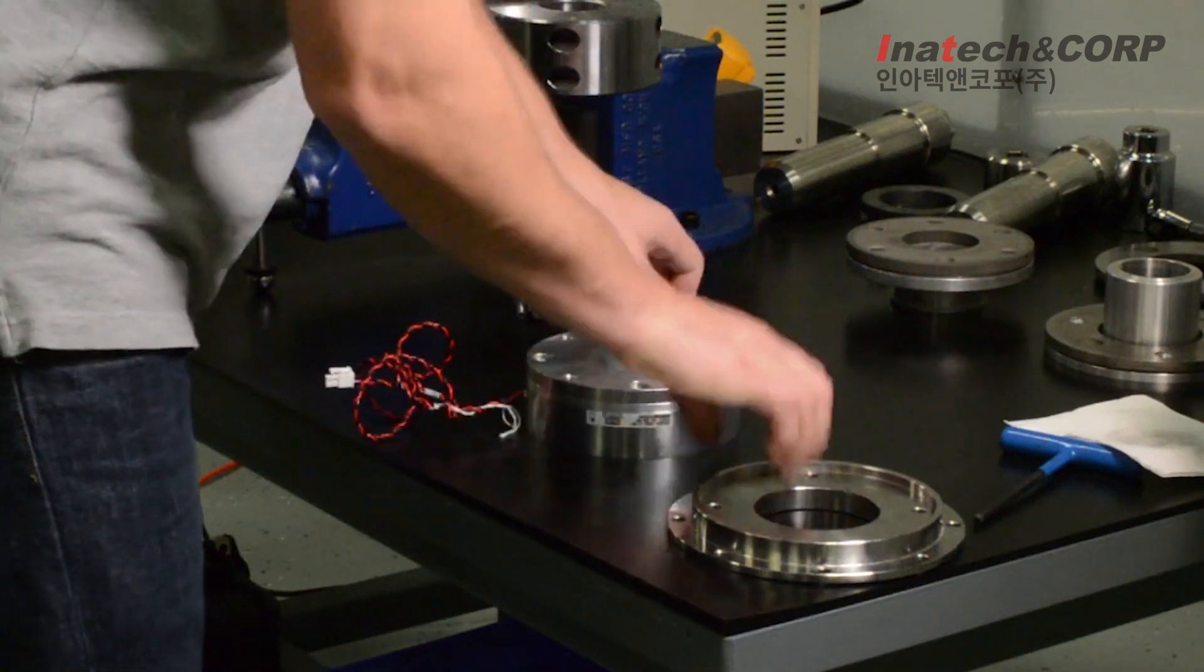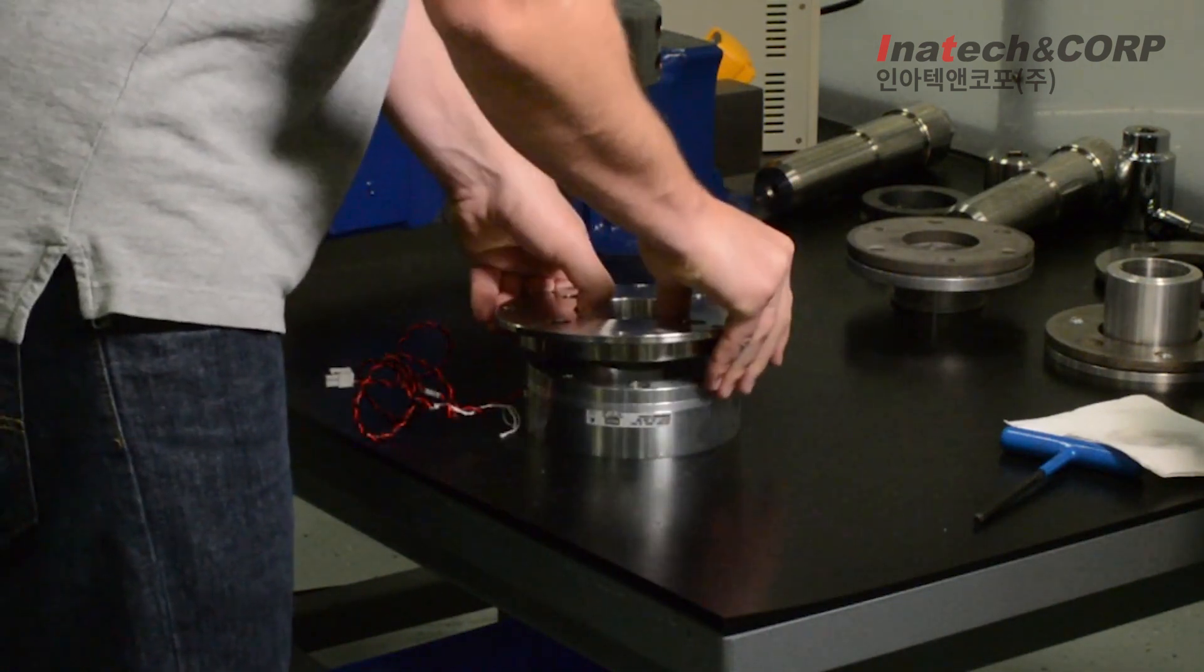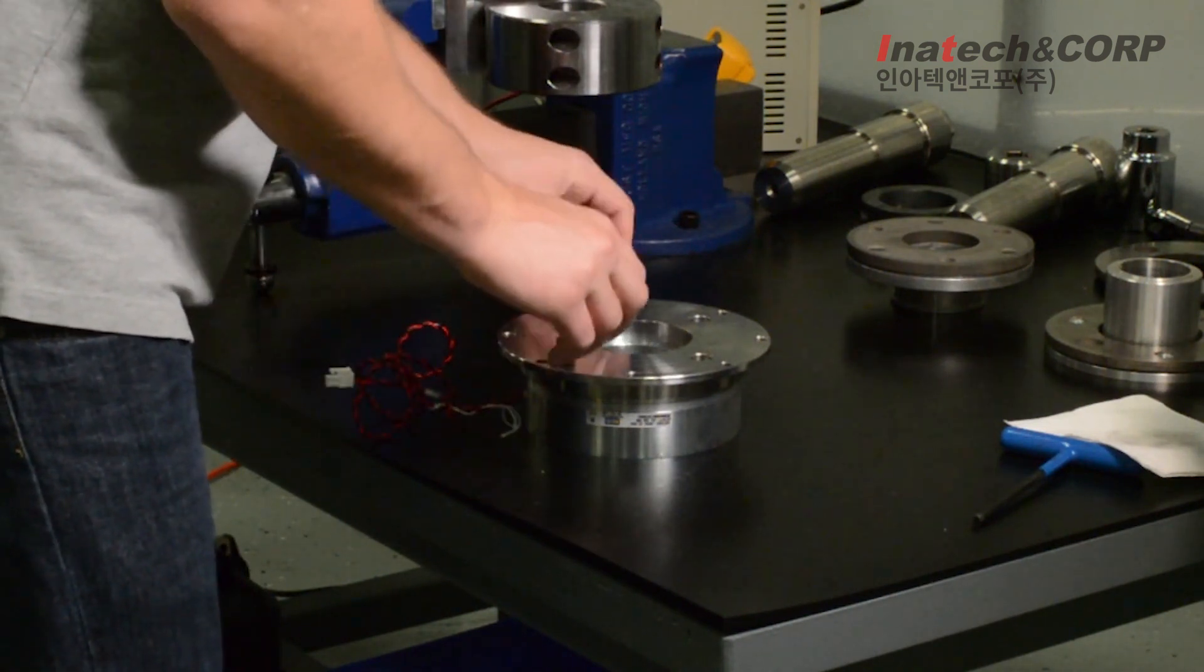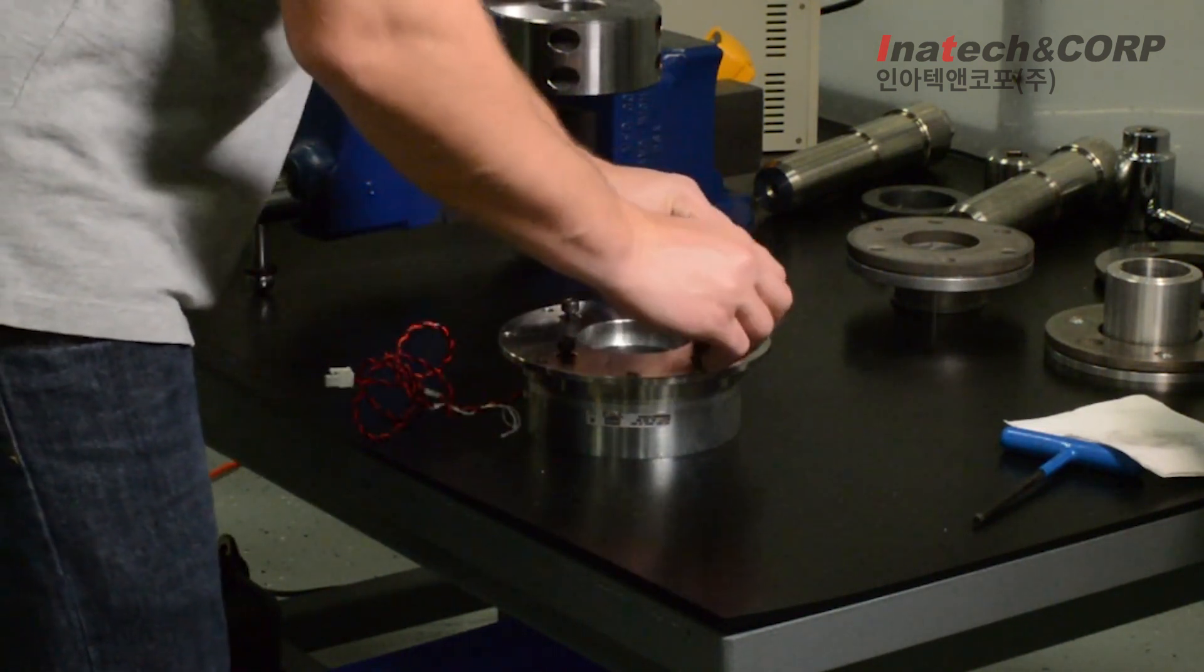First, you need to secure the magnet portion of the P1 brake to your motor or assembly. Here, it is being installed onto a flange that will mount on our assembly.